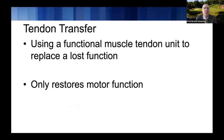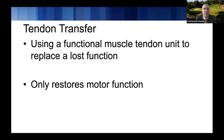When you think about a tendon transfer, the idea is we're using a functional muscle-tendon unit to replace a lost function. With a tendon transfer, you can restore motor function. This is opposed to a nerve transfer, which can also improve sensory function. With a tendon transfer, the goal is really just motor function.